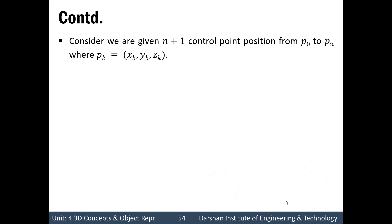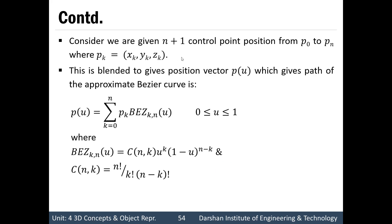Consider we are given n+1 control points from P0 to Pn, where Pk equals (xk, yk, zk). That is the general representation P0 to Pn. These are blended to give a position vector P(u), which gives the path of the approximate Bezier curve. That is, P(u) equals the summation from k=0 to n of Pk times BEZ(k,n)(u), where BEZ(k,n)(u) is the Bezier blending function and u varies from 0 to 1.